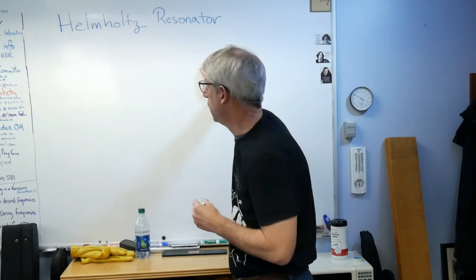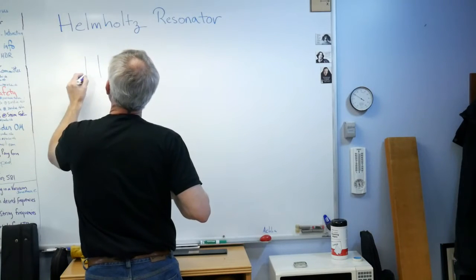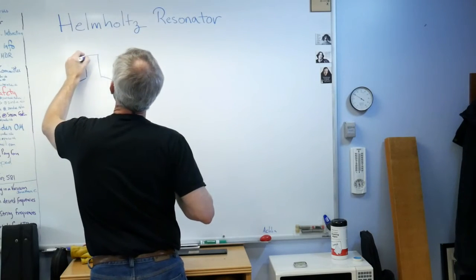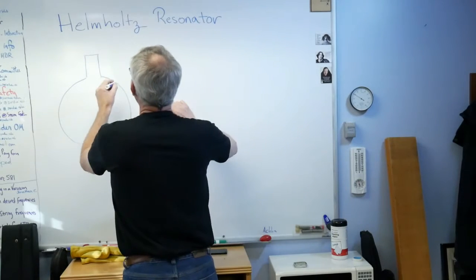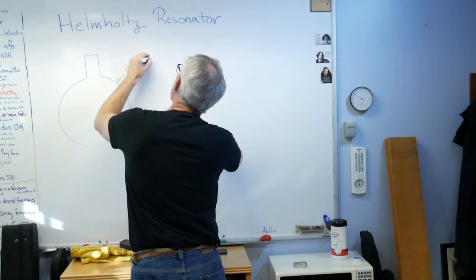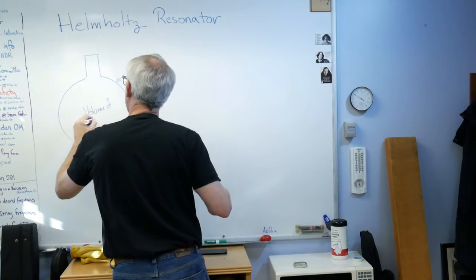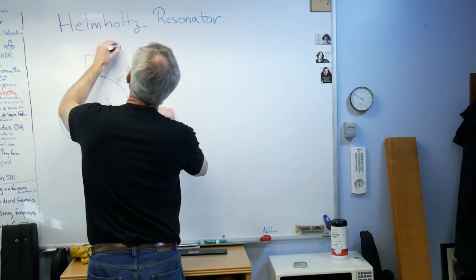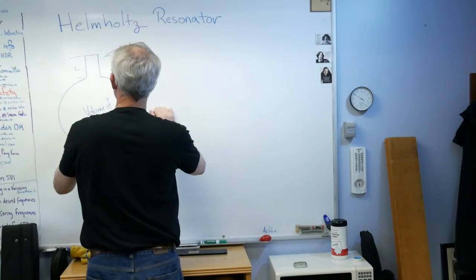Let's talk about what Helmholtz had in mind when he developed this resonator. The idea is imagine you have kind of a bottle, if you're a chemistry person maybe that's a Florence flask. It's got hard walls, acoustically hard walls, an interior volume of air. There's a neck with a length L and an area A.